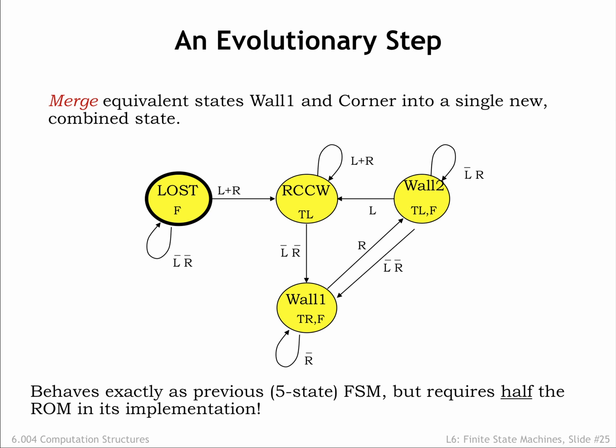The implementation of the 5-state machine requires 3 state bits, the implementation of the 4-state machine only requires 2 state bits. Reducing the number of state bits by 1 is huge since it reduces the size of the required ROM by half.